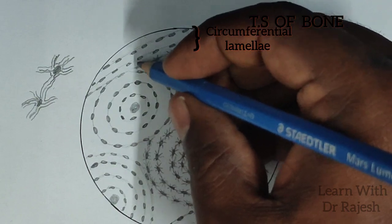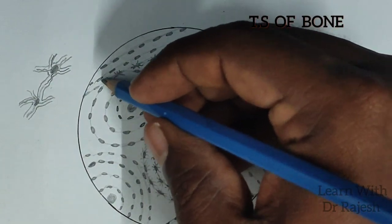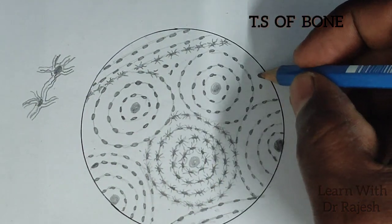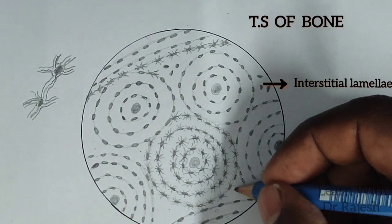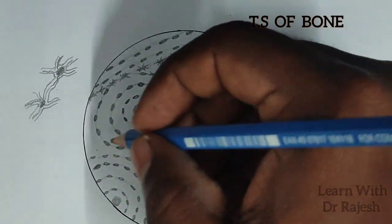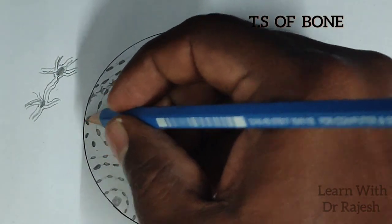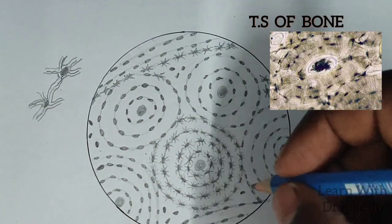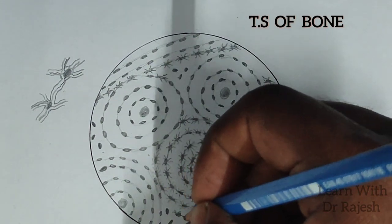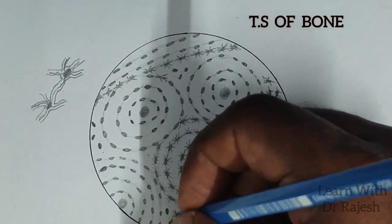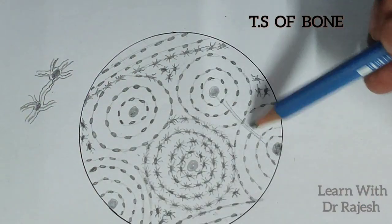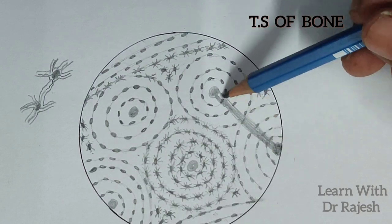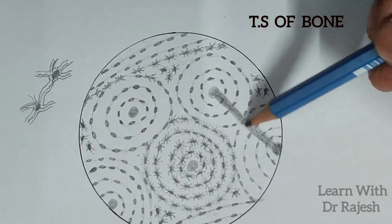This is how we draw the inner and outer circumferential lamellae. The next type of lamellae seen between the osteons are the interstitial lamellae — here the cells look scattered. So we have now seen three types of lamellae: concentric lamellae within the osteon, outer and inner circumferential lamellae present externally and internally, and interstitial lamellae drawn between the osteons.